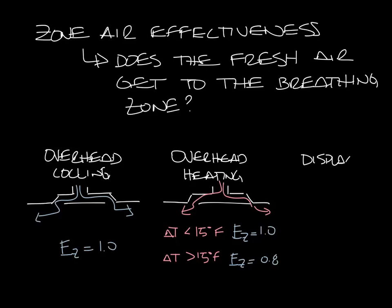So let's look at one more system type. For displacement ventilation, it actually has a ventilation effectiveness of 1.2, meaning that you can reduce your ventilation air if you use displacement ventilation systems.